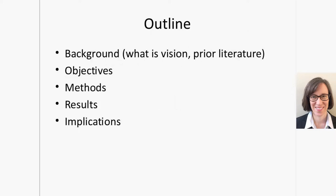I'm going to start by giving some background about vision, about the eye and what kinds of things can go wrong as we get older, and some of the literature we have on visual impairment and eye care utilization. Then I'll present my objectives, methods, results, and implications.